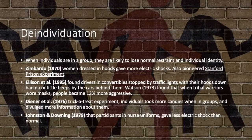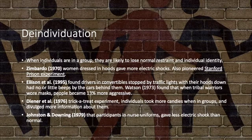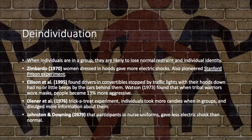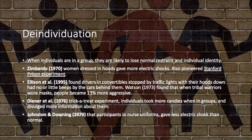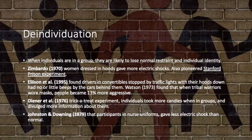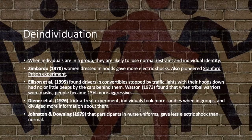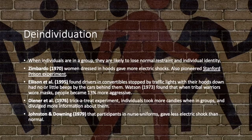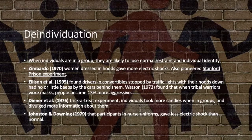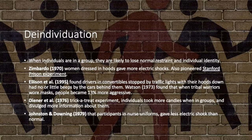Watson in 1973 found that tribal warriors wearing masks became 13% more aggressive. Diener et al in 1976 found that in a trick-or-treat experiment, individuals in groups took more candies and divulged more personal information compared to when they were alone — though this was a quasi-experiment. Johnston and Downing found in 1979 that participants in nurse uniforms gave fewer electric shocks than normal, suggesting the uniform promoted more pro-social behaviour.